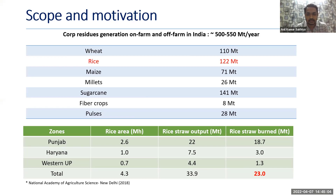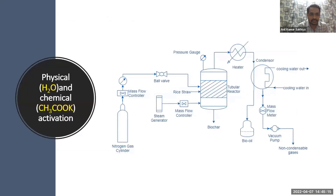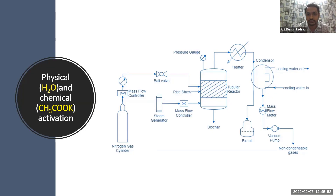Because of these limitations in utilizing rice straw as feedstock for combustion, we started the production of activated carbon in a small-scale pyrolysis unit. We developed activated carbon using steam as a physical activation agent and potassium acetate as a chemical activation agent. Potassium acetate is a non-toxic chemical, unlike phosphoric acid, sulfuric acid, NaOH, or potassium hydroxide, which are toxic, corrosive, and costly. That is why we selected steam for physical activation and potassium acetate for chemical activation.